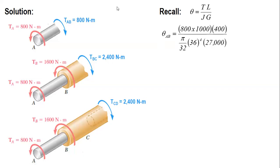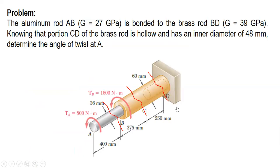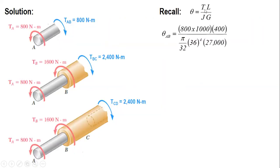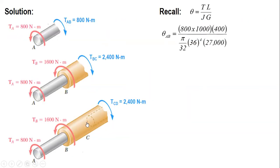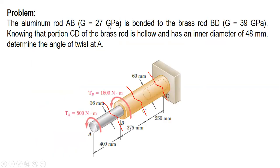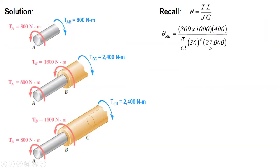For segment AB, the torque is 800 Nm, converted to newton-millimeters by multiplying by 1000. The length is 400 mm. For a solid shaft, the polar moment of inertia is π/32 times diameter to the 4th, with diameter 36 mm. The modulus of rigidity is 27 GPa, converted to 27,000 MPa. The result is 0.0719 radians.